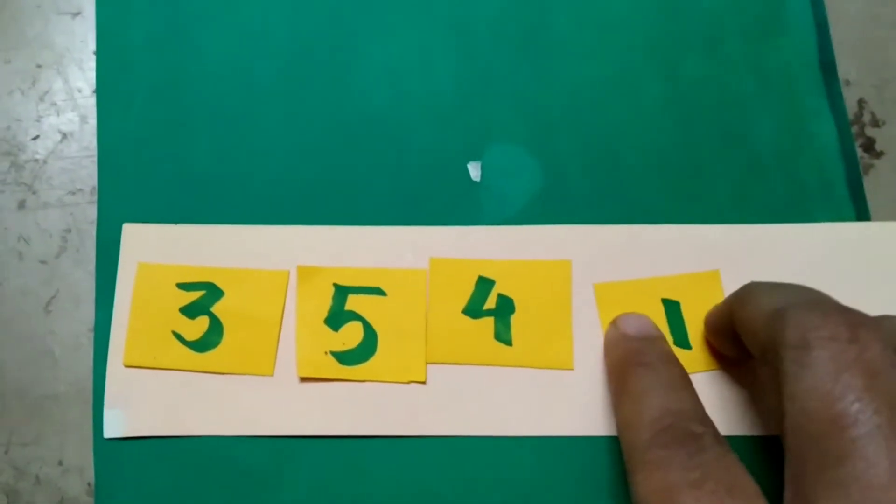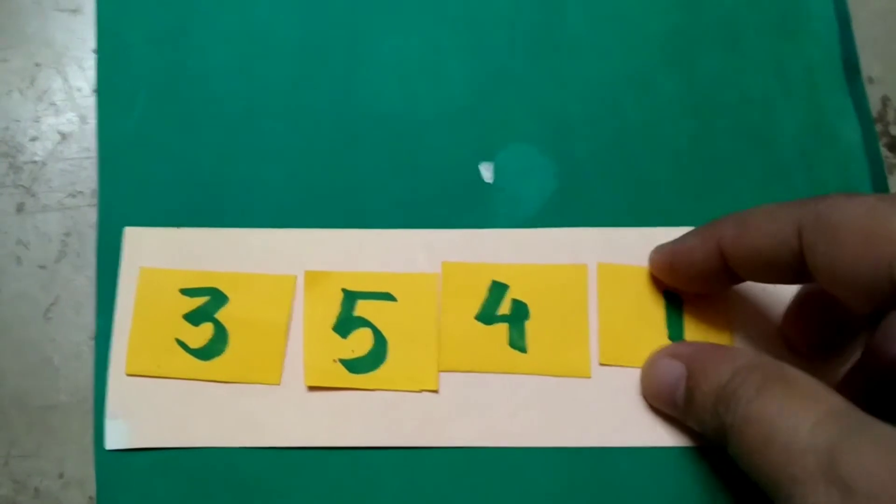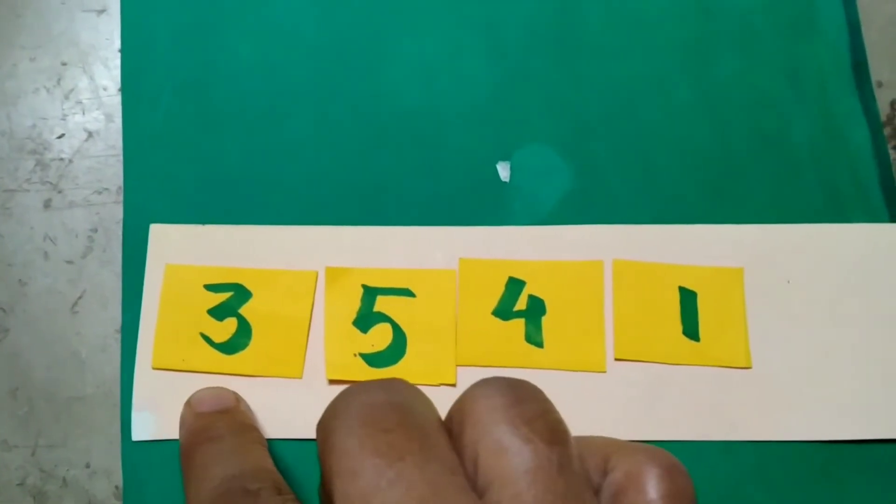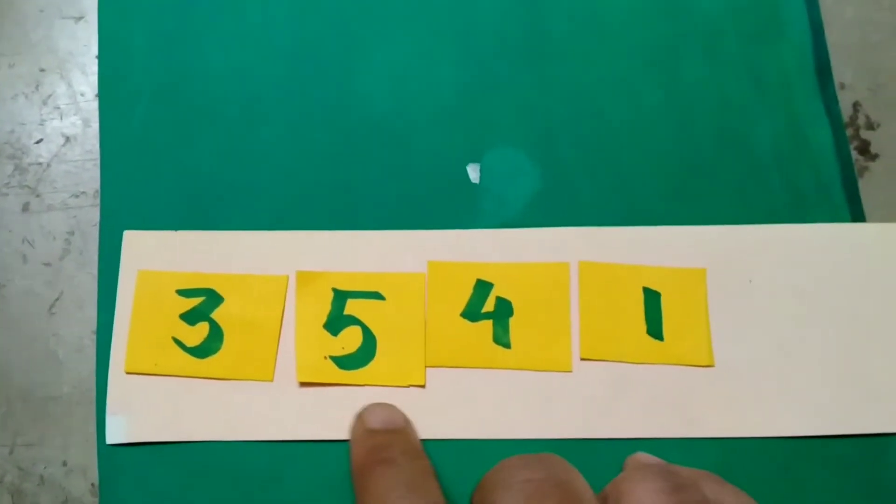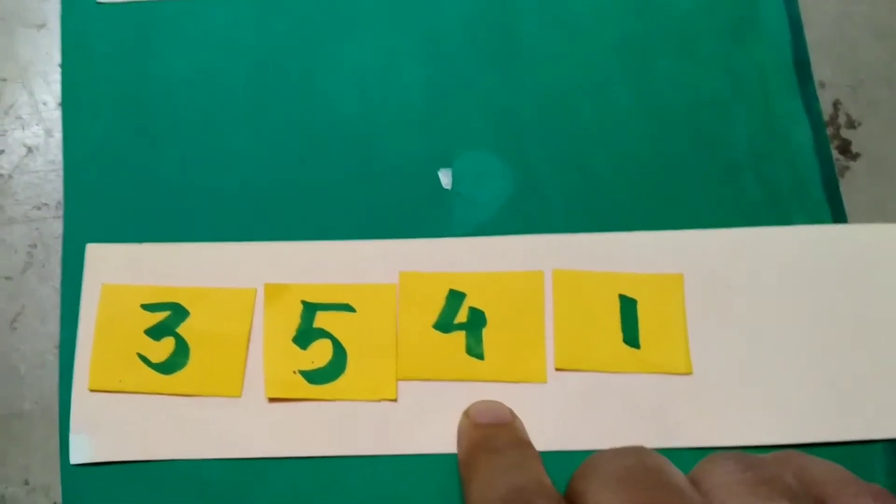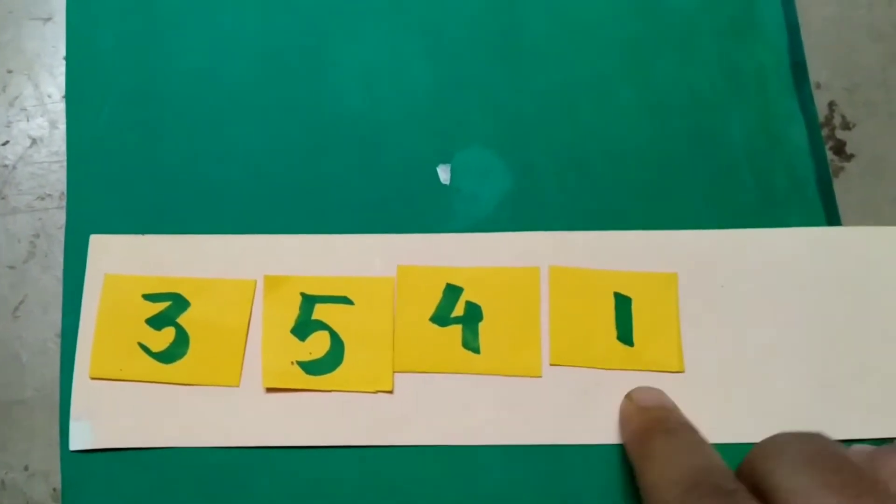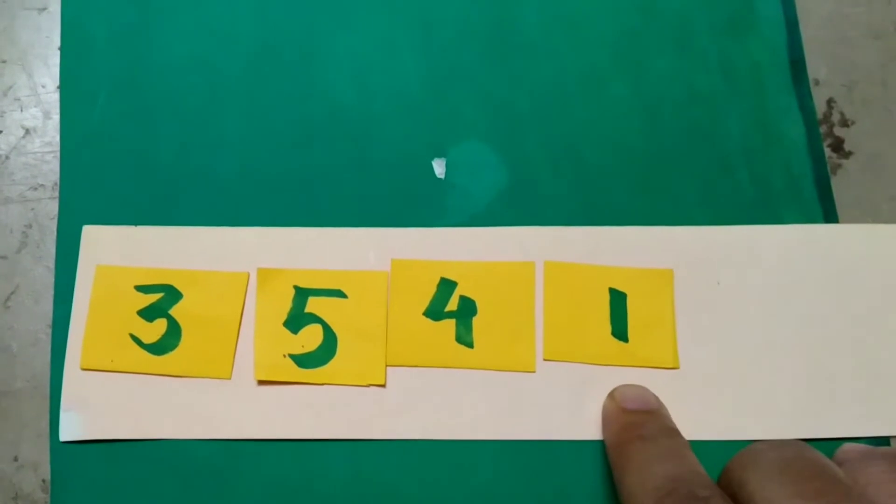3541. So the face value of these numbers means 3's face value is 3, 5 is 5, 4's face value is 4, and 1's place value is 1.